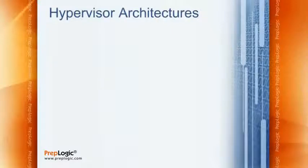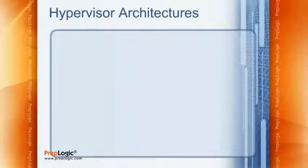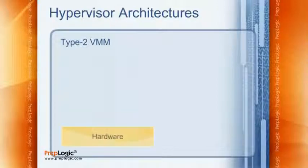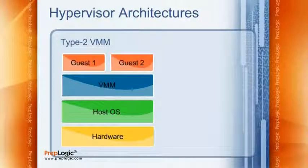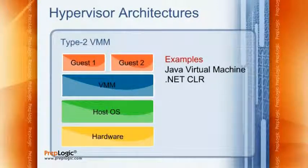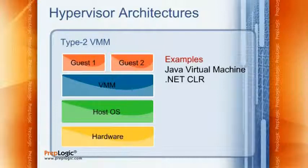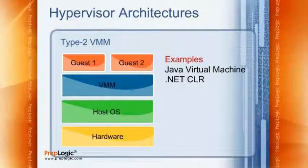One key concept to understand about virtualization is the hypervisor. The hypervisor is the most efficient way to run virtual machines, though there are three different implementation methods. The first is the Type 2 Virtual Machine Manager, where we have hardware, an operating system, and then the VMM running on top of that. Examples include the Java Virtual Machine and the .NET CLR — these are usually application-level virtualization.